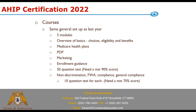Let's talk about the courses. For those who took AHIP last year, it's the same general setup — five modules: overview of basics, choices, eligibility and benefits, a module on health plans, PDP, and marketing and enrollment guidance. At the end of completing all five modules, there are 50 questions on the test, and you need a minimum score of 90% to pass. When you're done with the test, just remember you're not done.